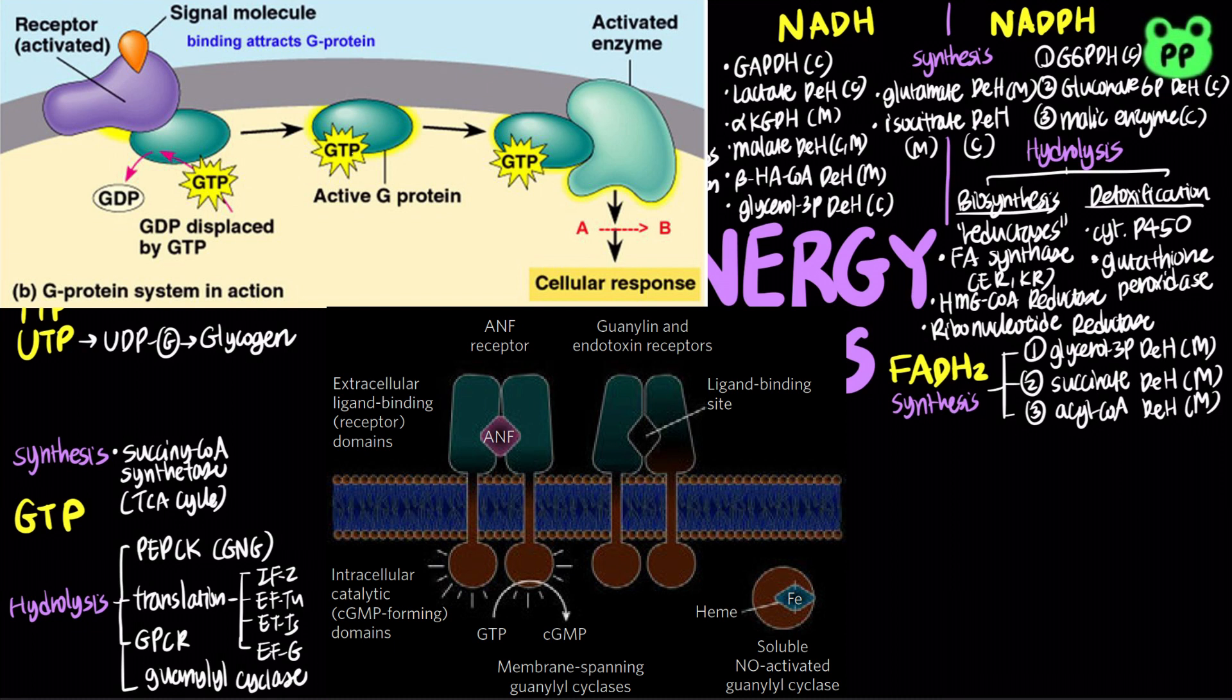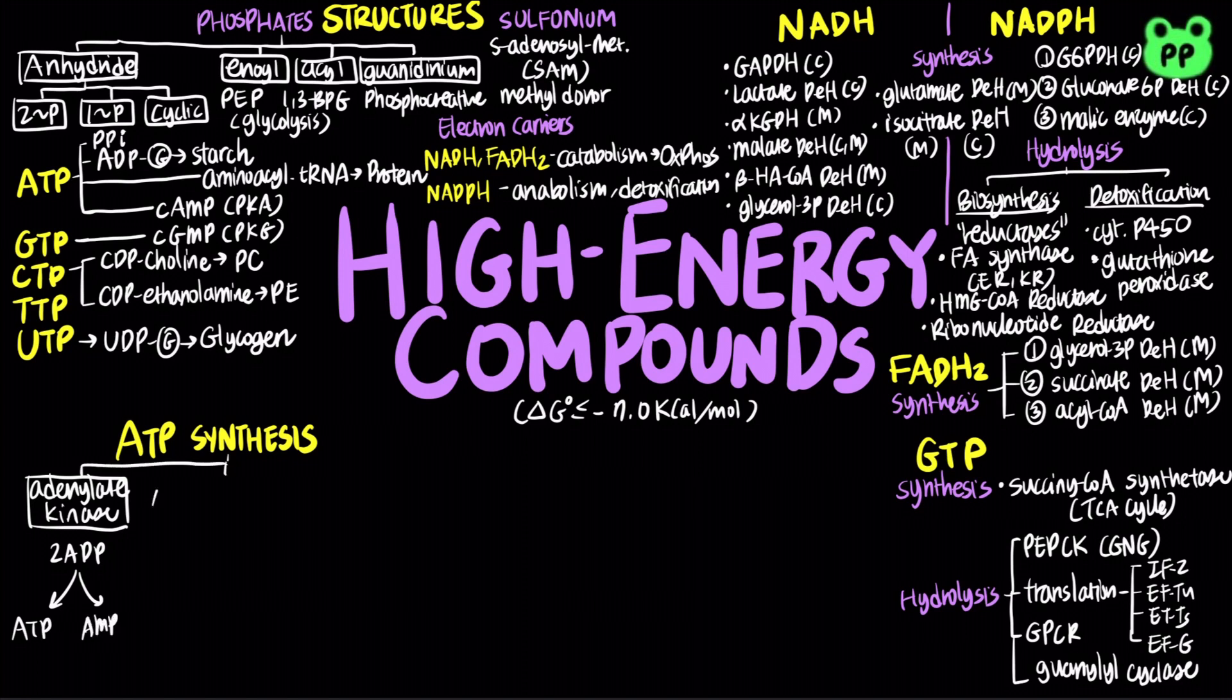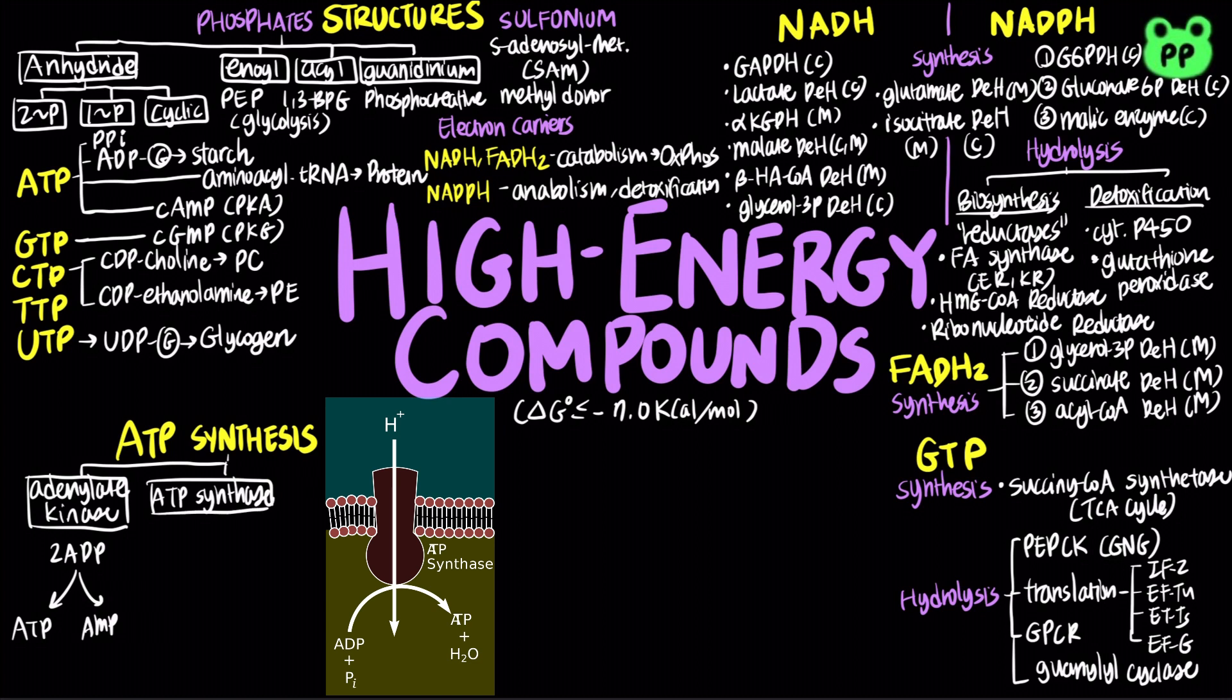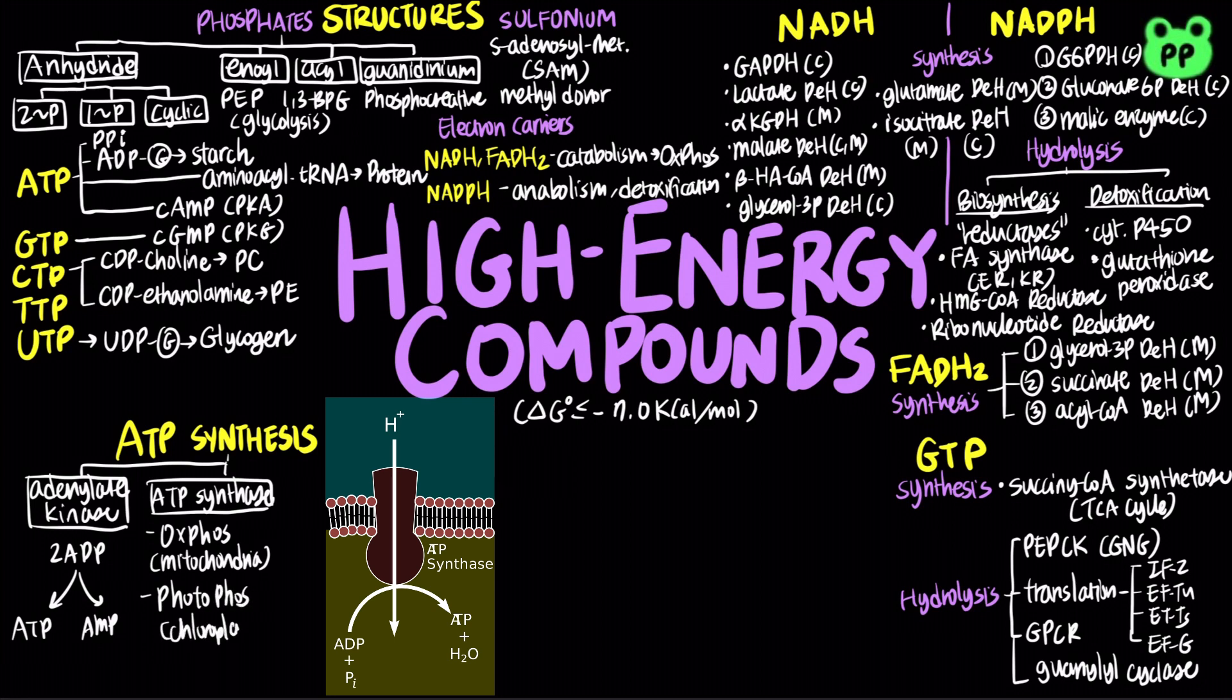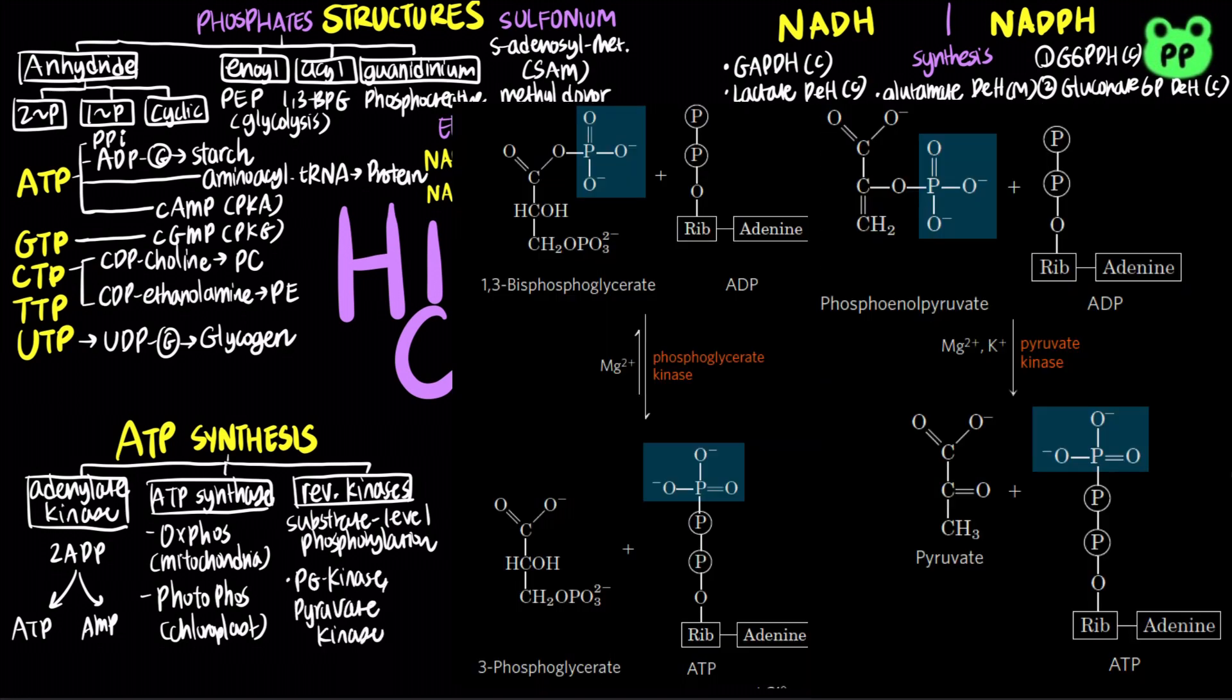ATP synthesis can be catalyzed by three different mechanisms. It can be catalyzed by adenylate kinase, which converts two ADP to ATP and AMP. It can also be catalyzed from ATP synthase through proton motive force in oxidative phosphorylation of mitochondria or photophosphorylation of chloroplast. ATP synthesis can also be catalyzed by reversible kinases, known as substrate-level phosphorylation and dephosphorylation, including phosphoglycerate kinase and pyruvate kinase from glycolysis.